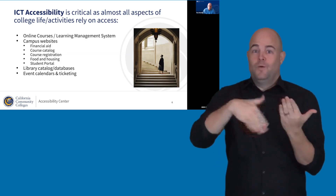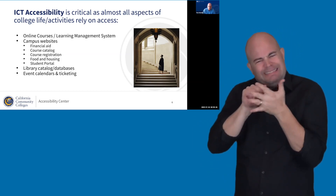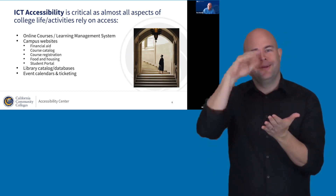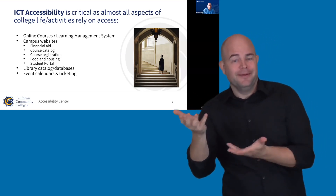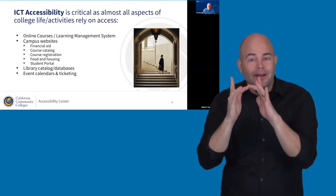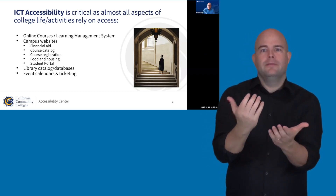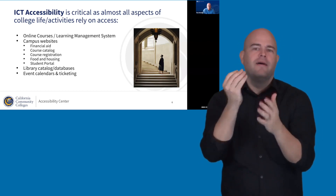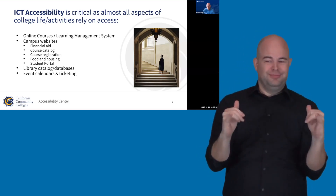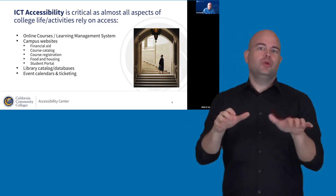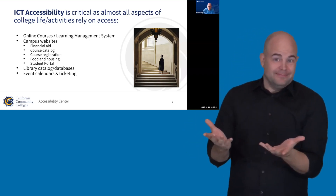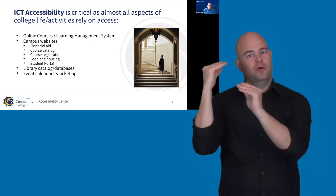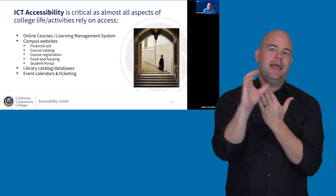I've listed a number of really critical systems that students use all the time: online course environments like learning management systems such as Canvas, various campus websites for financial aid, course catalogs, course registration, food and housing, and the student portal. Another big area is library catalogs and databases used in instruction, as well as event calendars and online ticketing.